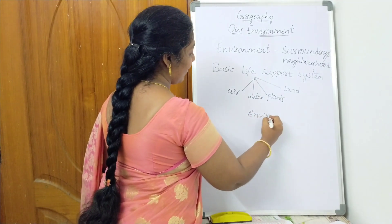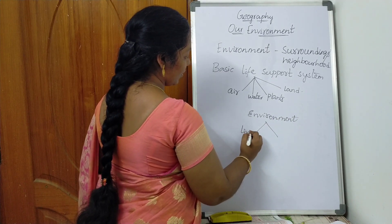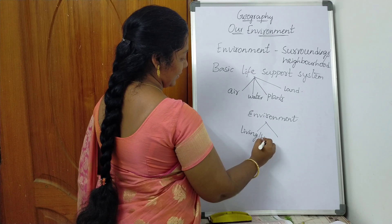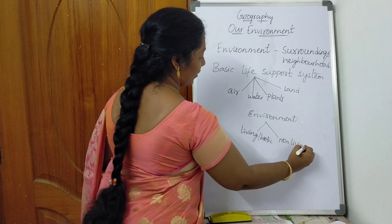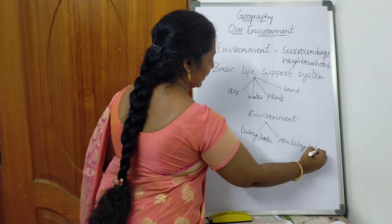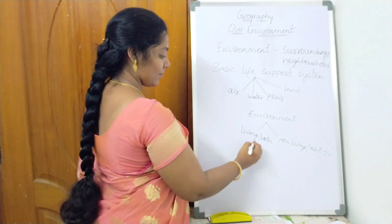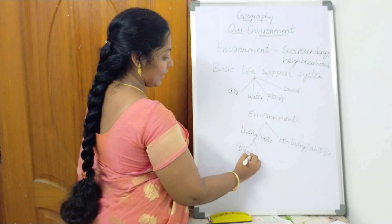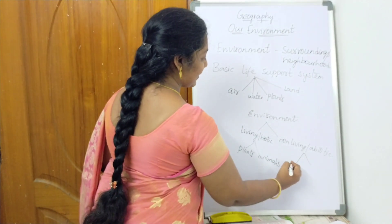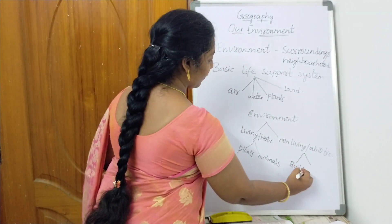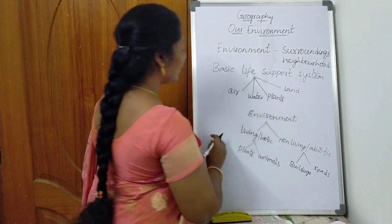So our environment is having both living things and non-living things. Living things are also called as biotic. This is a scientific term. Non-living things are called as abiotic. Can you give some examples for living things in the environment? Plants, animals — all these come under living things. And non-living things like buildings, roads — all these come under non-living things.